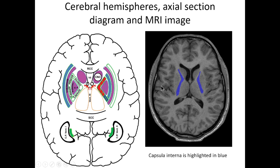If we try to open the parietal lobe and temporal lobe, we can find this insula. Posteriorly, here is SCC — splenium corporis callosi. And this black structure is the posterior horn of the lateral ventricle. This is sulcus calcarinus, which forms here the calcar avis.